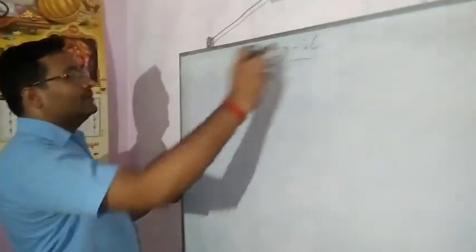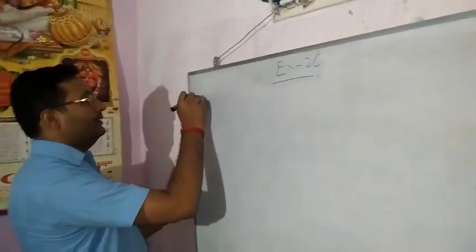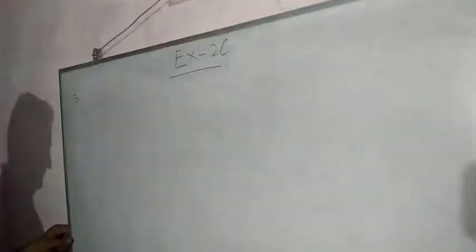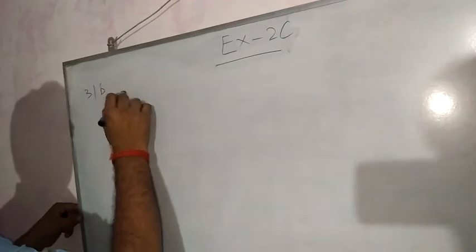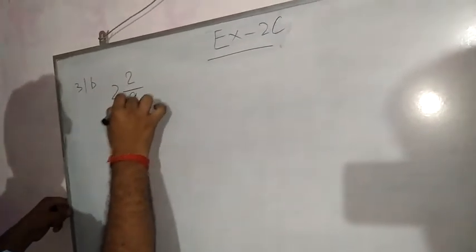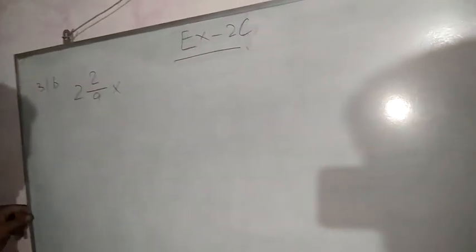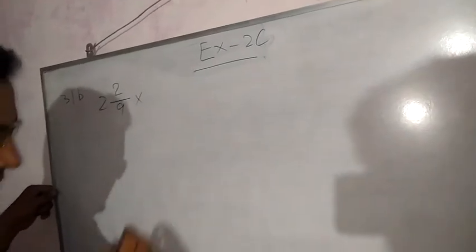So Exercise 2C, question number 3B. Question is 2 whole 2/9 into 3/5.